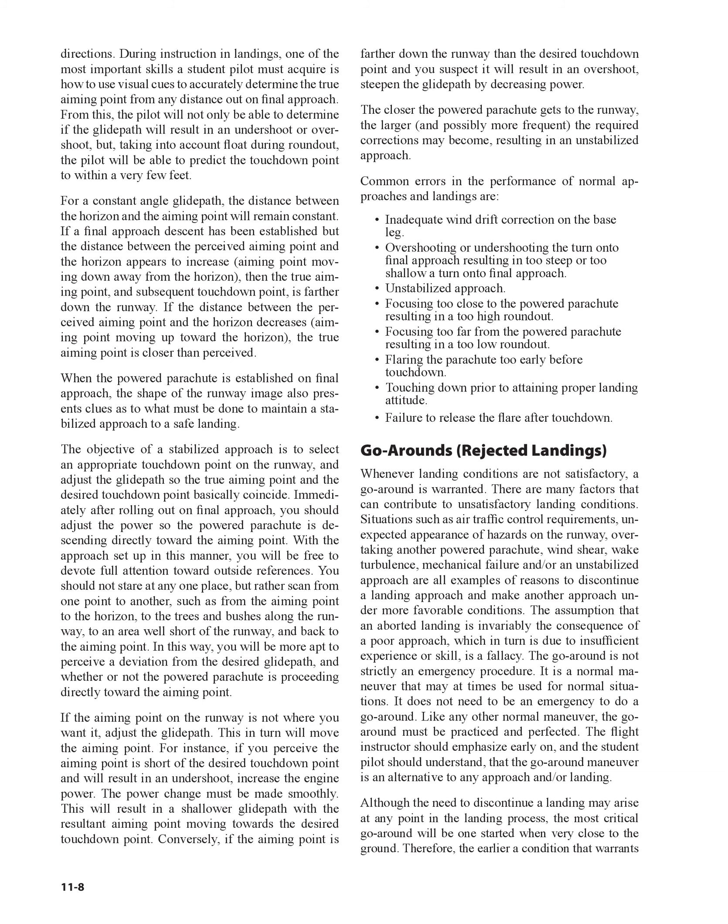When the powered parachute is established on final approach, the shape of the runway image also provides clues as to what must be done to maintain a stabilized approach to a safe landing. The objective of a stabilized approach is to select an appropriate touchdown point on the runway and adjust the glide path so the true aiming point and the desired touchdown point basically coincide. Immediately after rolling out on final approach, adjust the power so the powered parachute is descending directly toward the aiming point. You should scan from one point to another — from the aiming point to the horizon, to the trees and bushes along the runway, to an area well short of the runway, and back to the aiming point — to perceive any deviation from the desired glide path.